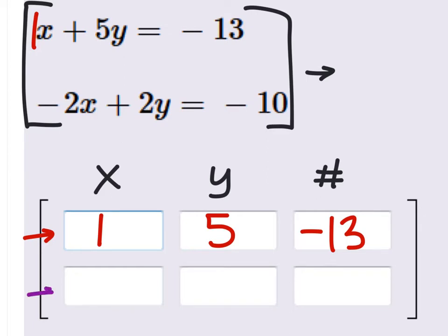And then the number is just negative 13, or the answer. In the second row, which we're going to put in the second row, the coefficient of x is negative 2. The coefficient of y is positive 2, and the answer there equals a negative 10. That is the augmented matrix.